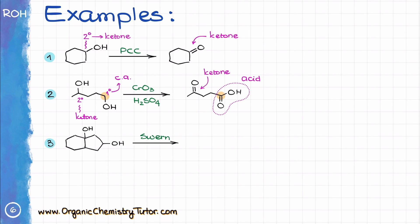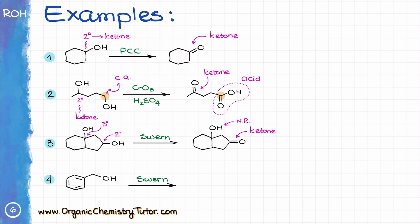In the next example, there are again two OH groups — one is a tertiary alcohol and the other is a secondary alcohol. We know that tertiary alcohols cannot be oxidized, so we keep that one unchanged. The secondary alcohol, however, turns into the corresponding ketone. And finally, for the benzylic alcohol example: since it is a primary alcohol, the Swern oxidation converts it to the corresponding aldehyde, and it stops there.